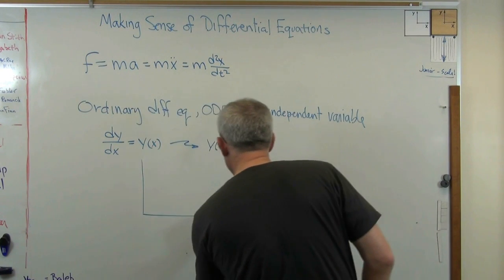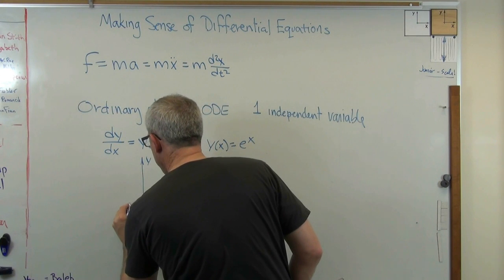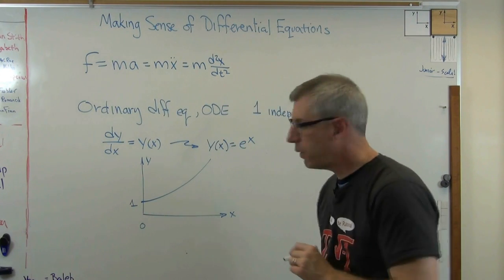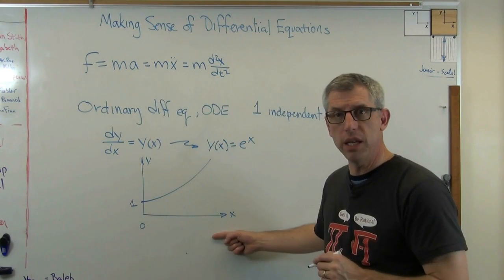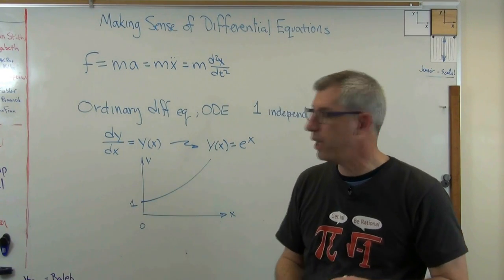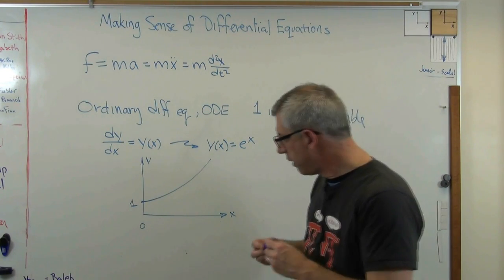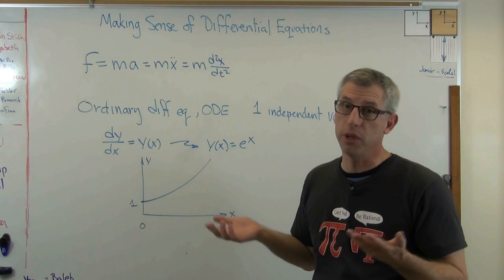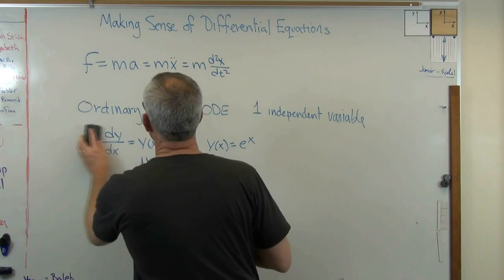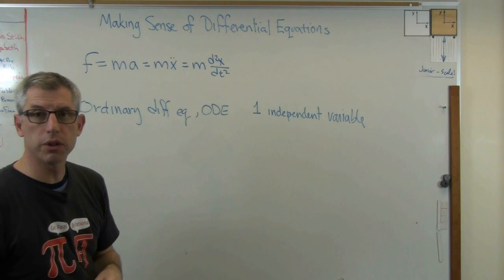To plot that out, it looks like this — and there's my initial condition from last time: y equals 1 when x equals 0. The curve looks like this. The x-axis is the independent variable, which can change however it wants. The y-axis is the dependent variable — it can't change however it wants. For an ordinary differential equation, you've got a function of one variable, with a slope with respect to only one independent variable. That's called an ordinary differential equation.